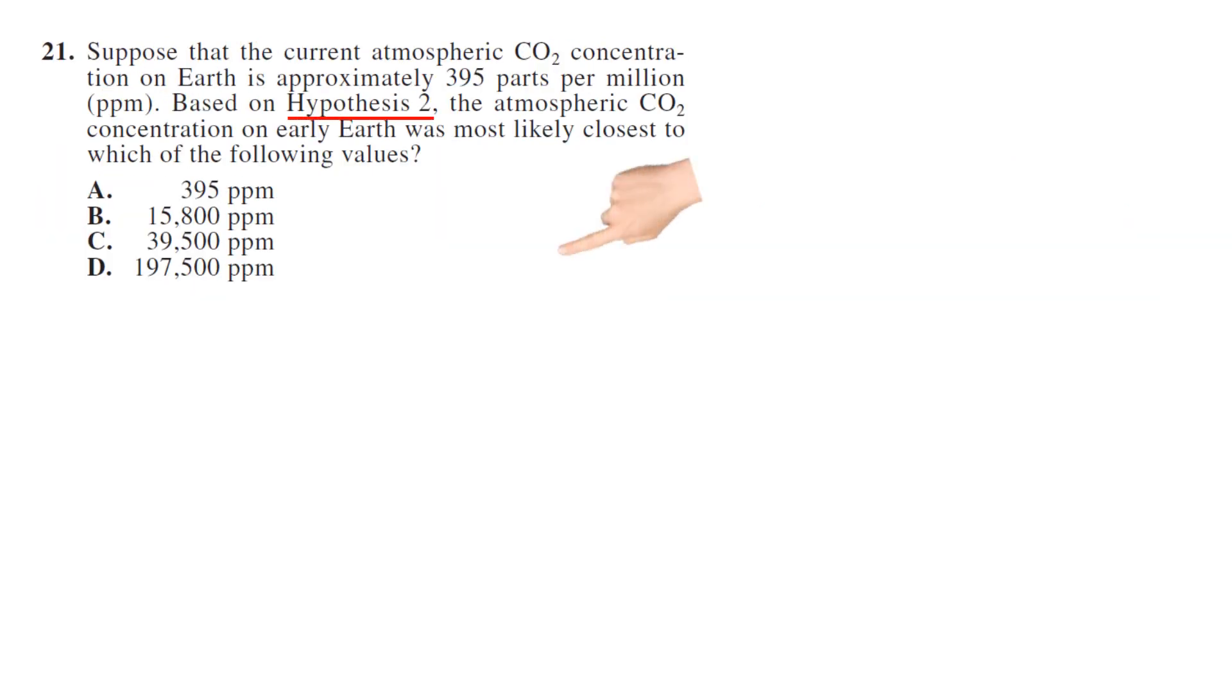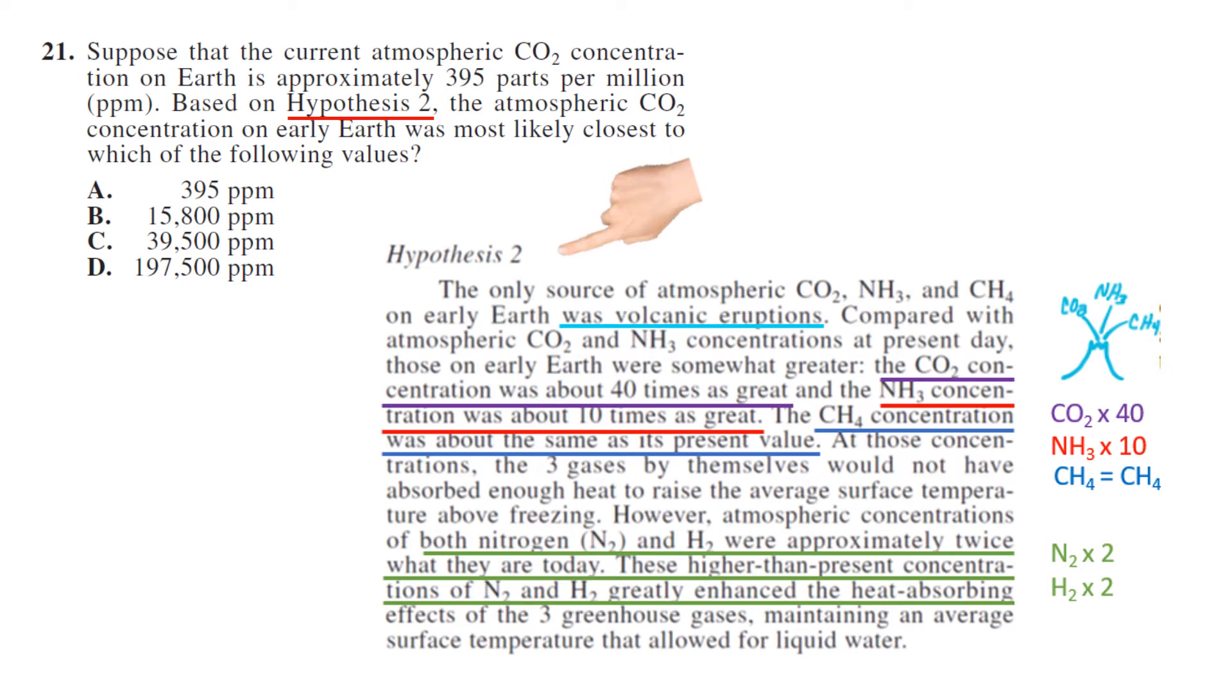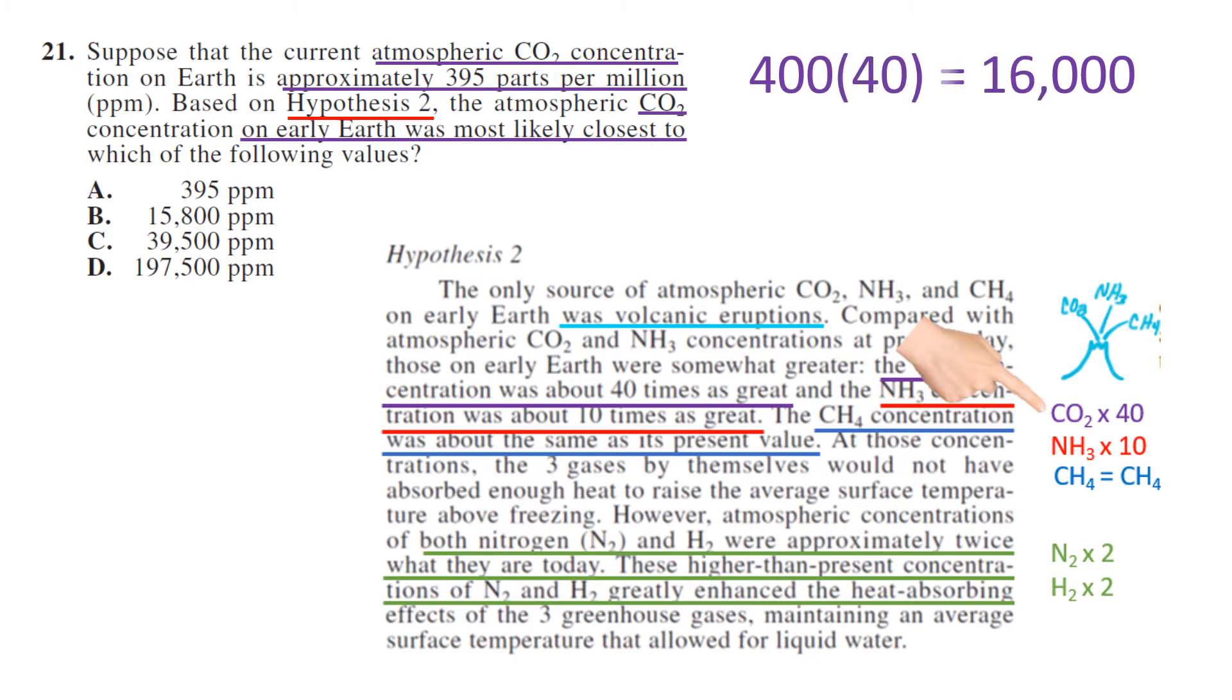Question 21: We're using hypothesis two. Suppose the current atmospheric CO2 concentration is approximately 395 parts per million. The atmospheric CO2 on early Earth was most likely... Okay, so we know that early Earth CO2 was about 40 times more, so 40 times about 400 is about 16,000, or choice B.